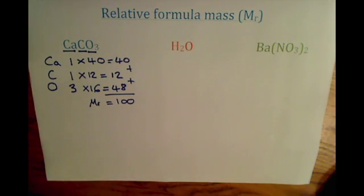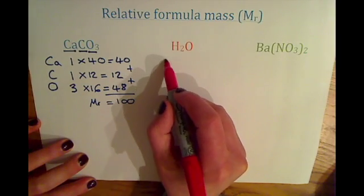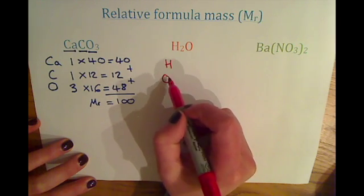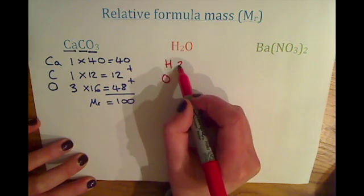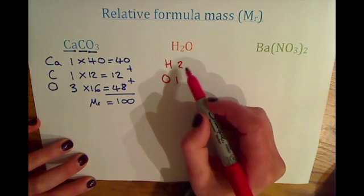For H2O then, as our second example, we use exactly the same method. We write down our elements, H and O. We've got two hydrogens, one oxygen. So we find the masses on the periodic table.